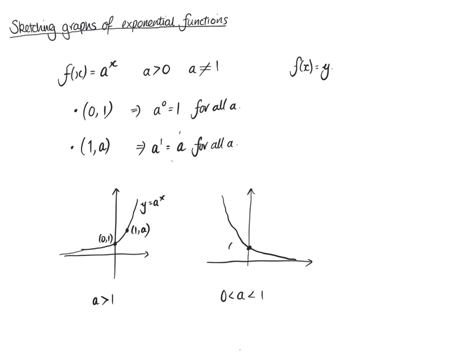For exponential decay, you still have (0, 1) and then (1, a), but because a is between 0 and 1 — like a half or a third — your graph decays. Also, for these graphs, another important thing to note is that the graph never crosses the x-axis, and this is its asymptote. Similar to a tan graph where the graph goes from very positive to very negative at 90 degrees — that's an asymptote.